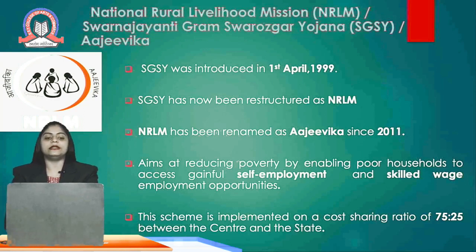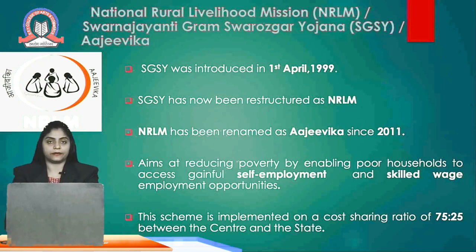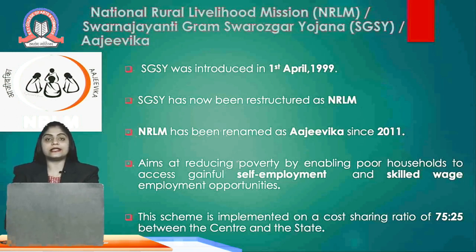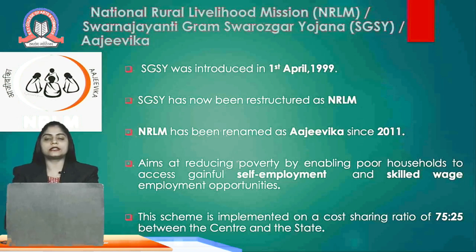The next scheme is National Rural Livelihood Mission, NRLM. Earlier it was Swarna Jayanti Gram Swarozgar Yojana and now it is called RGVK. Swarna Jayanti Gram Swarozgar Yojana was introduced on 1st April 1999 with the aim to enable poor households to access gainful self-employment and skilled wage employment opportunities. It was later restructured as NRLM. Since 2011, it is called RGVK. The cost-sharing ratio is 75 to 25, with 75% sponsored by the central government and 25% by the state government.